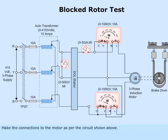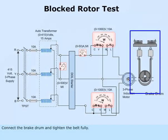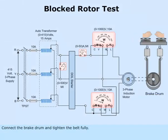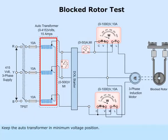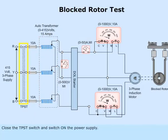Make the connections to the motor as per the circuit shown above. Connect the brake drum and tighten the belt fully. Keep the autotransformer in minimum voltage position. Close the TPST switch and switch on the power supply.